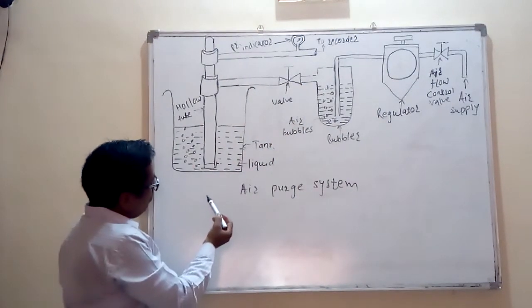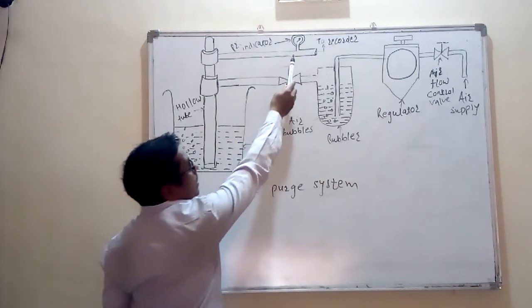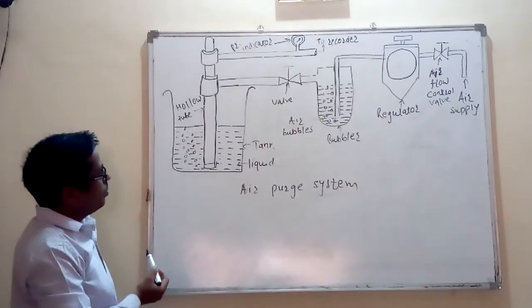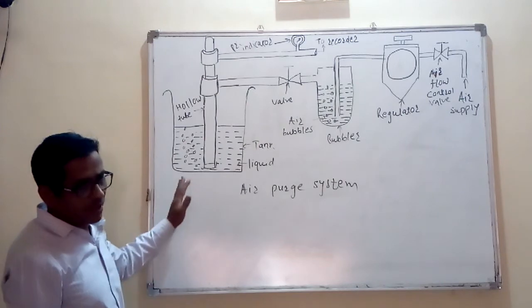Now, the level of the tank is calibrated in terms of pressure gauge reading, or in other words, pressure gauge reading gives you the level of the liquid in the vessel tank. So, this is about air purge system.